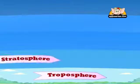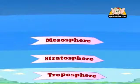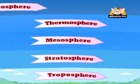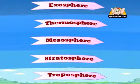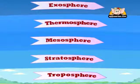The Earth's atmosphere has five layers: Troposphere, Stratosphere, Mesosphere, Thermosphere and Exosphere. Atmospheric gases become thinner as you go higher.